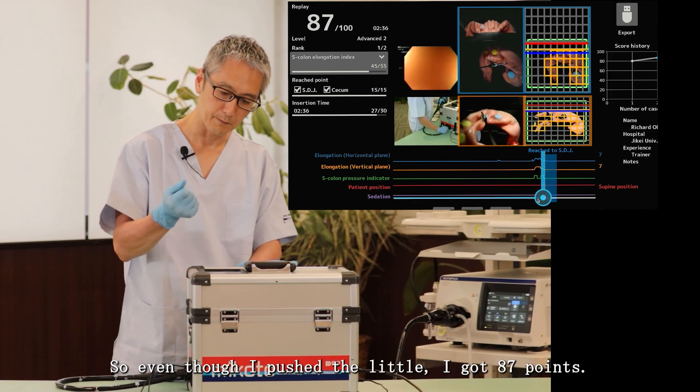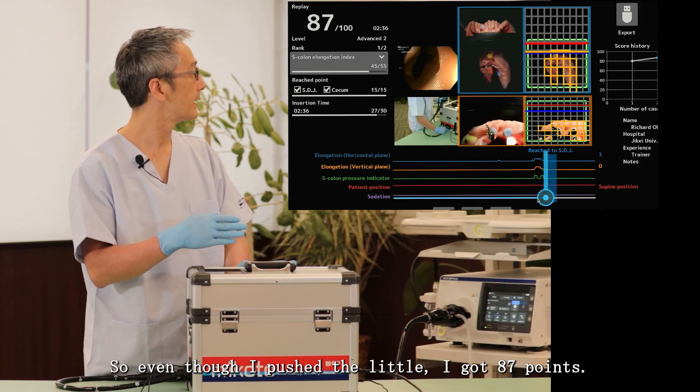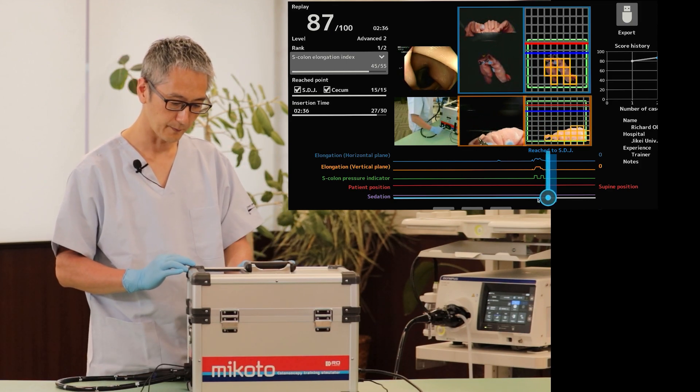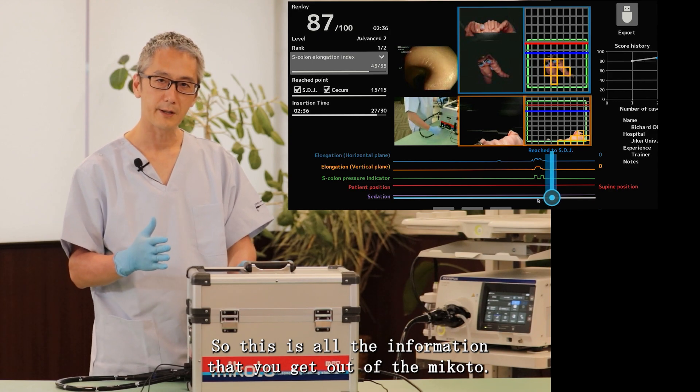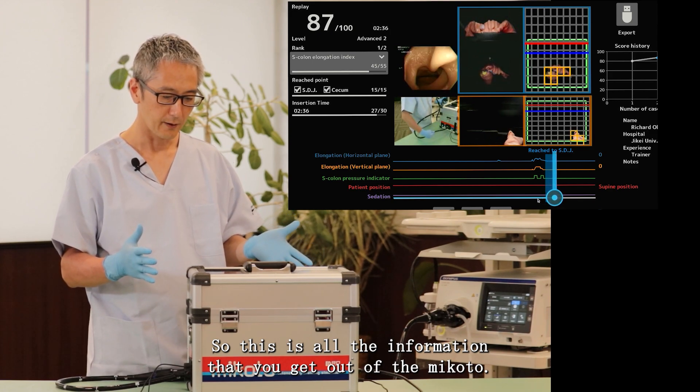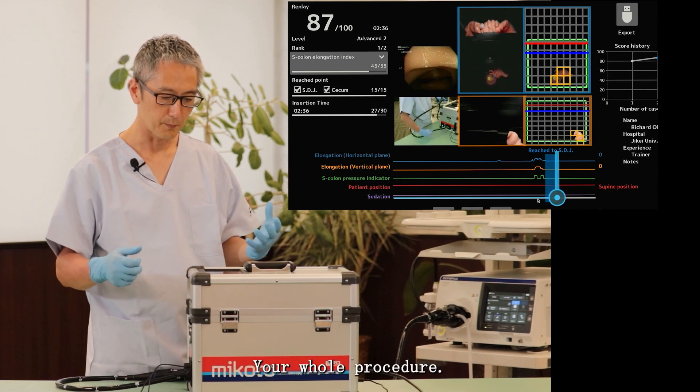But still sufficiently managed to shorten the sigmoid colon quickly. So even though I pushed a little, I got 87 points. So this is all the information that you get out of the Mikoto, your whole procedure.